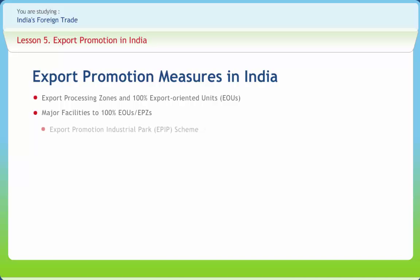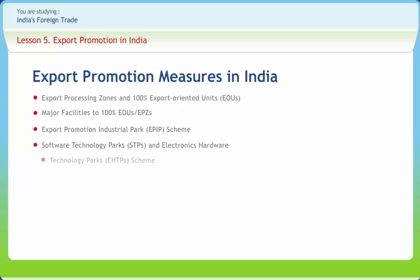A centrally sponsored Export Promotion Industrial Park (EPIP) scheme has been introduced with a view to involving state governments in the creation of infrastructural facilities for export-oriented production. Software Technology Parks (STPs) are 100% export-oriented projects catering to the needs of software development.